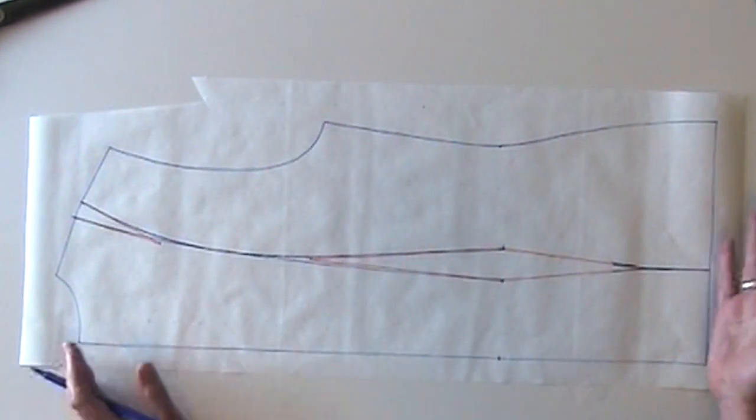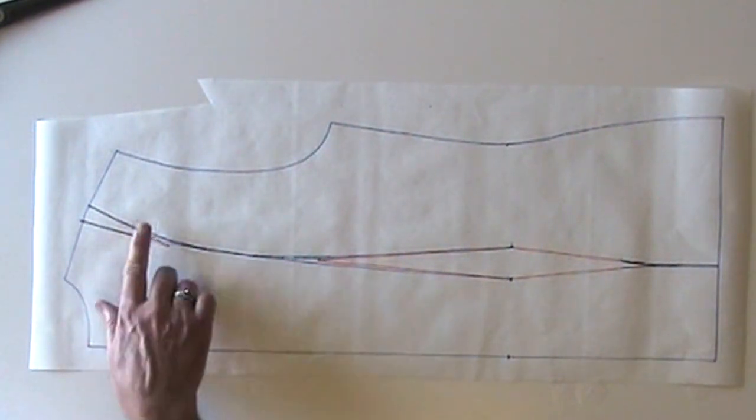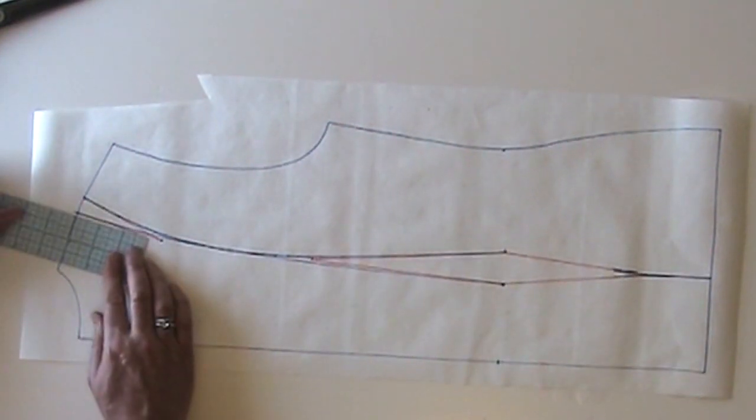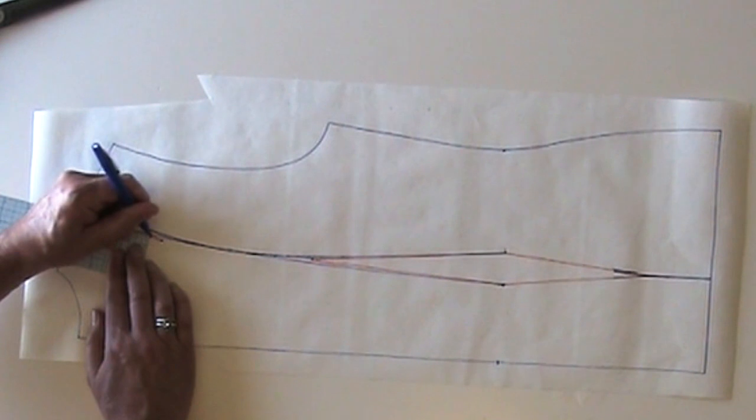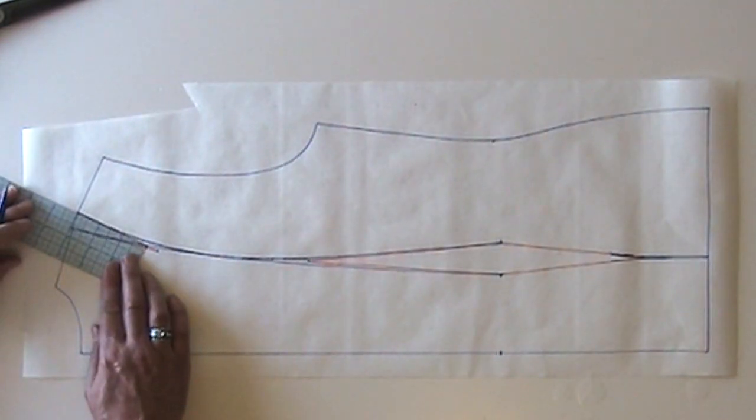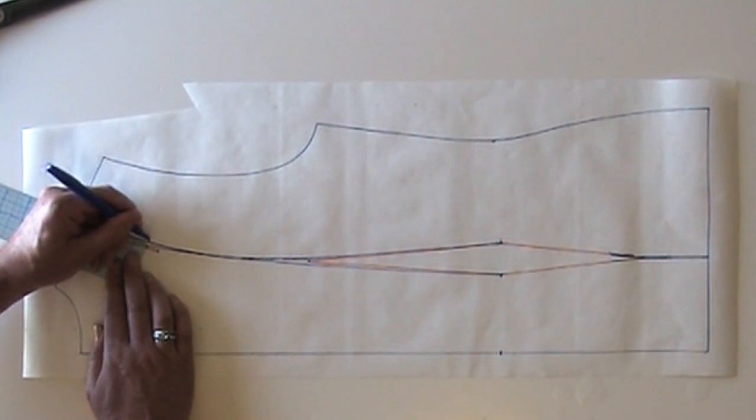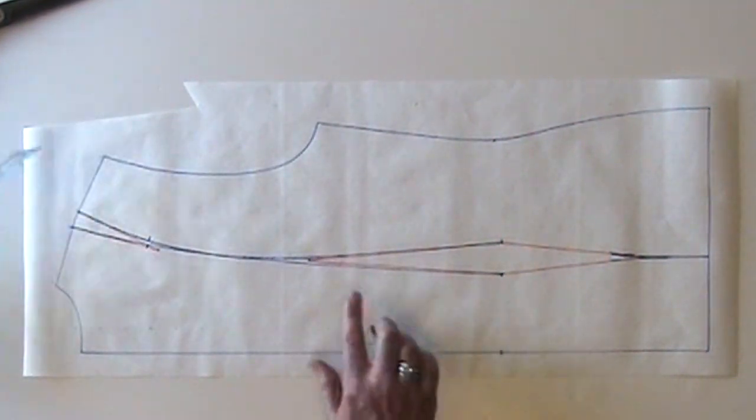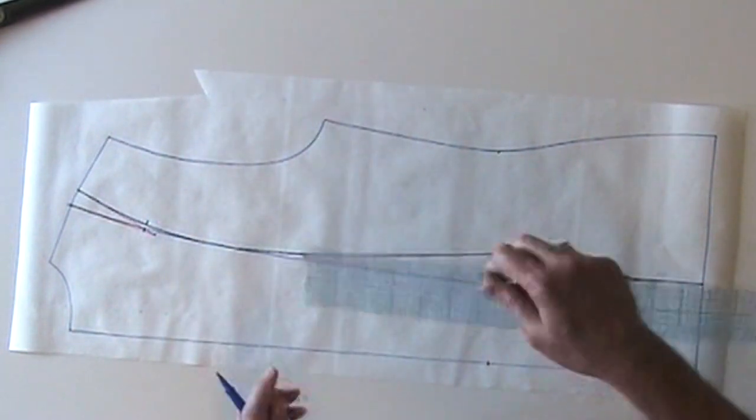And like before, we need to add some notches. I'm going to add a couple of notches at the top. Let's say three inches from the shoulder, here at the center panel and at the side panel.